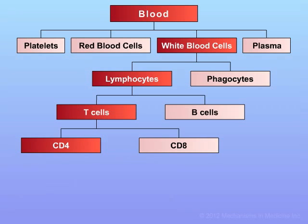These various components of the immune system not only play individual roles in orchestrating the immune response, but each of these cell types can also interact with one another to either amplify immune responses or alternatively dampen immune responses, rendering those responses less effective than they otherwise would be.